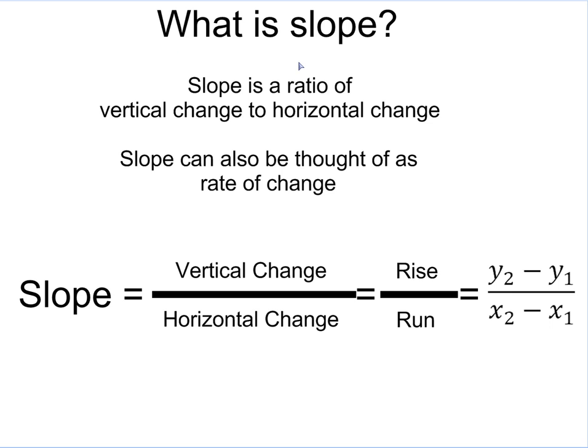First, what is slope? Slope is the ratio of vertical change to horizontal change. Slope can also be thought of as rate of change, and this is typically how we see it in our everyday lives. Slope is vertical change over horizontal change, which also can be called rise over run. This is typically what most people actually remember, that slope is rise over run.